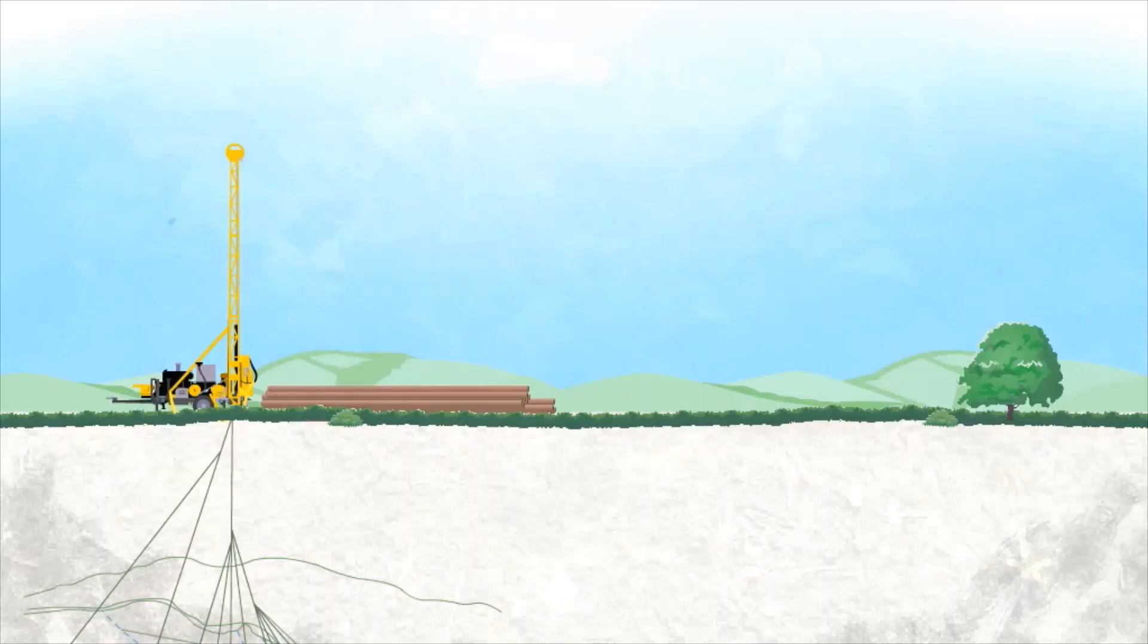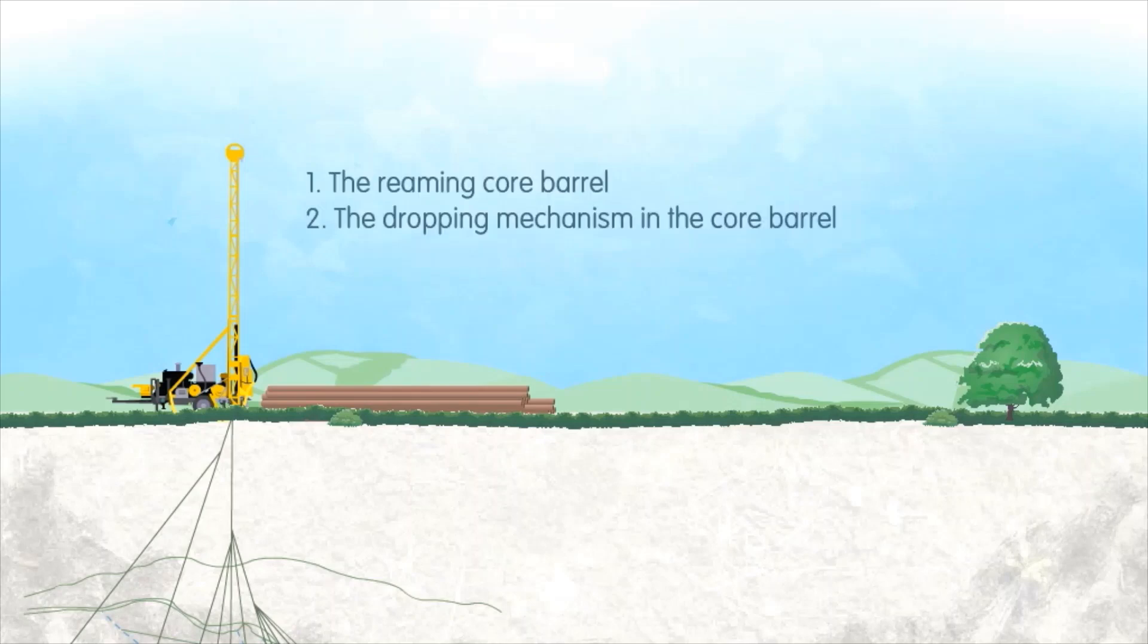Prep work on the surface involves three items: 1. The reaming core barrel. 2. The dropping mechanism in the core barrel. 3. The split zero trip wedge.